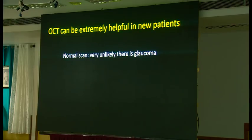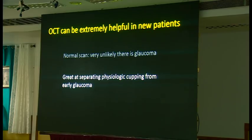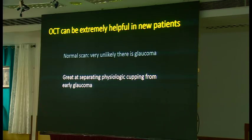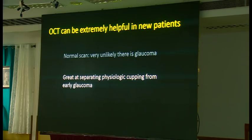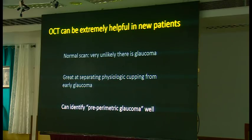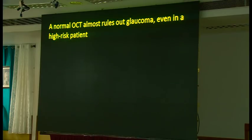OCT is extremely helpful in new patients. A normal scan tells us it's very unlikely there's new glaucoma, and it's a very good test at separating physiological cupping from early glaucoma. When you see an abnormal optic nerve it's extremely helpful to get an OCT. Whereas our clinical exam is critical for finding people who may have glaucoma, the OCT does a much better job of confirming or rejecting that initial hypothesis. It can also identify people who have glaucoma very early, meaning those people at least need to be followed and oftentimes treated.